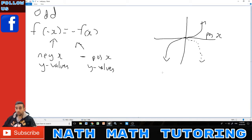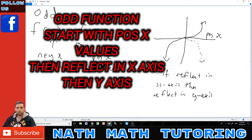So you can see for an odd function, you first reflect in the x-axis, then reflect in the y-axis. It's just a double shift. If I just clean the board.